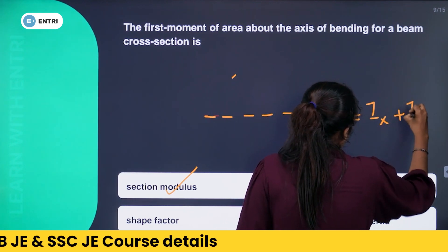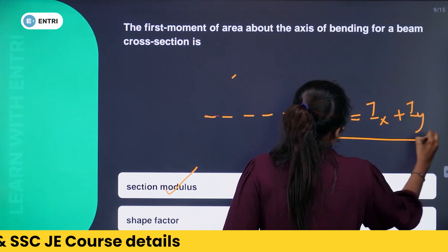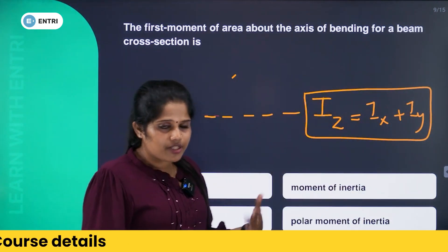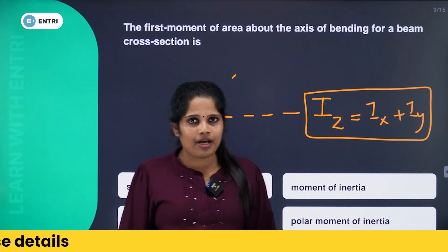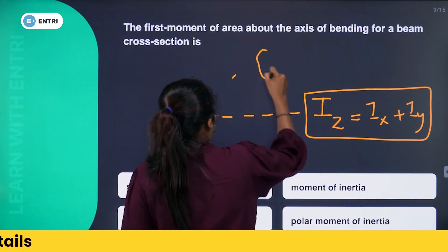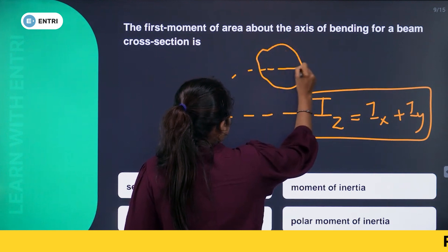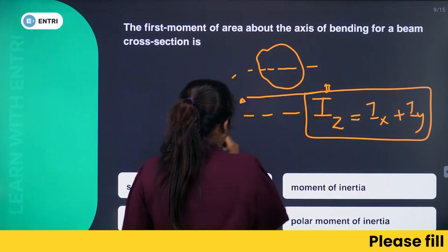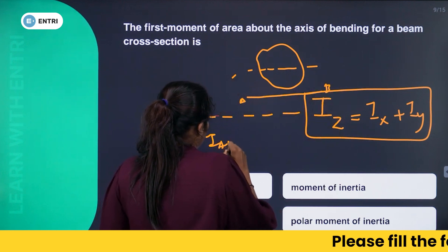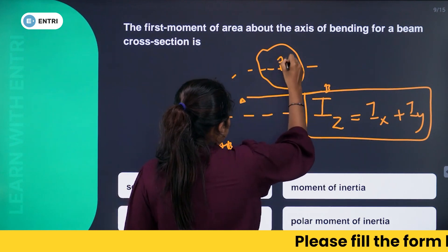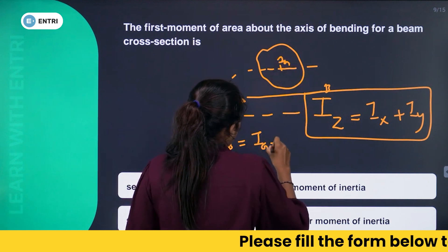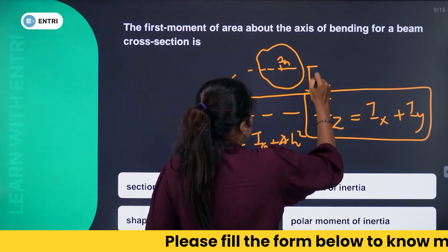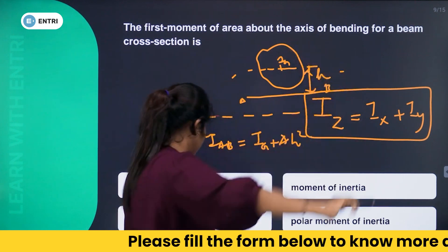Ix plus Iy gives the polar moment of inertia about the perpendicular C-axis — this is the perpendicular axis theorem. The parallel axis theorem states that IAB equals IG plus A·h², where h is the distance between the two parallel axes.